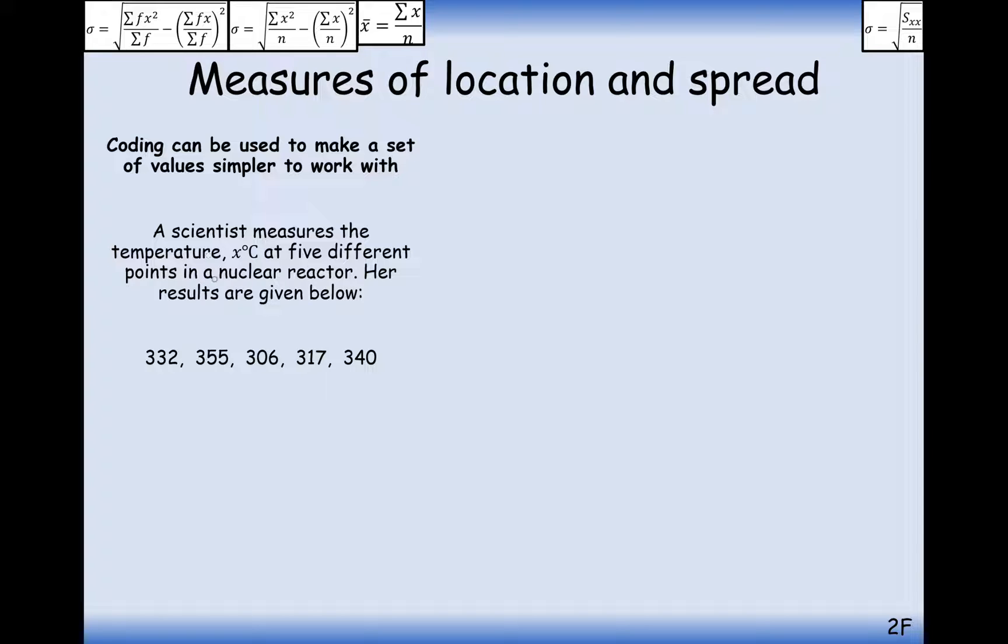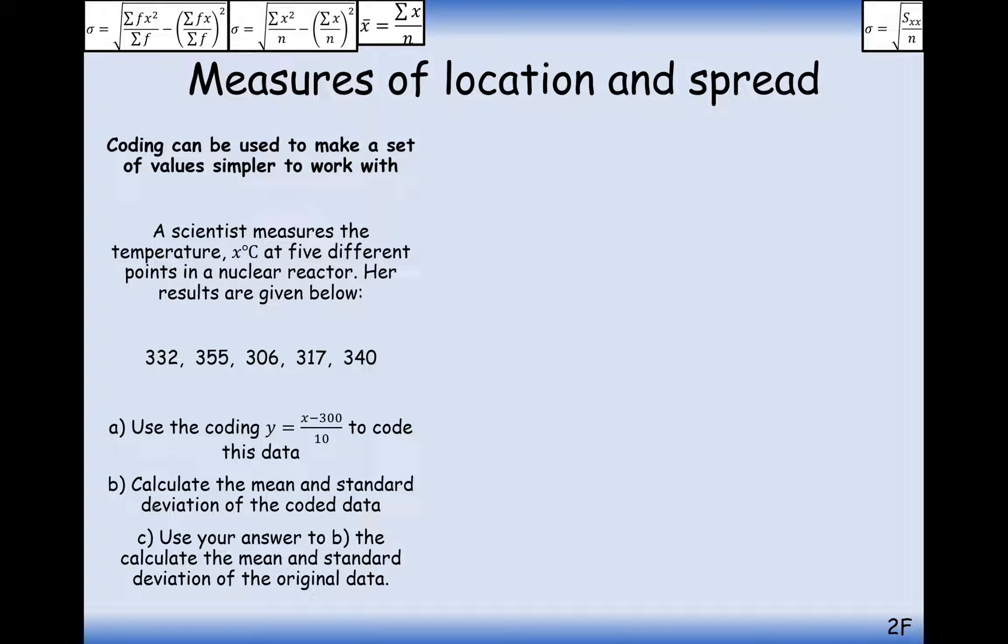Okay, so we have these data values here for the number of temperatures at five different nuclear reactors. What we're going to do is we're going to use the coding of y, so let's call these x pieces of data, we're going to do x, all these pieces of data, take away 300, and then divide by 10 to get some y values, and then we'll work out the mean and the standard deviation of those y values, and then work our way back to the x values. So these are our questions. Calculate the mean and standard deviation of the coded data, and use your answer in part b to calculate the mean and standard deviation of the original data.